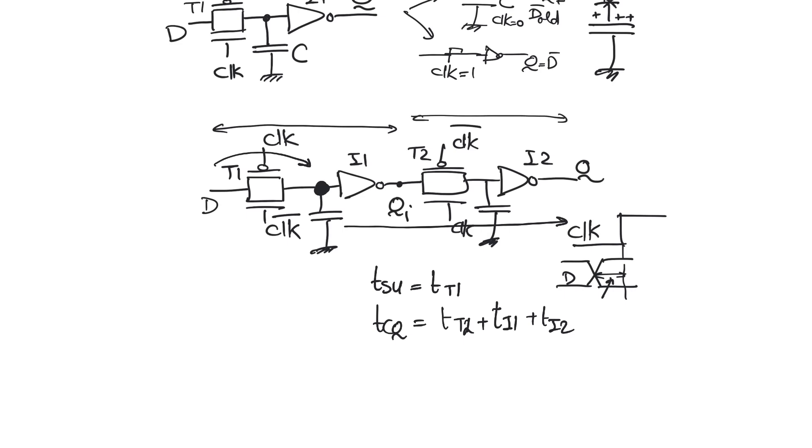Now what is hold time? Again if the clock is perfect as with the static latch, hold time will be zero because as soon as the active edge comes, transmission gate 1 disconnects D from the rest of the circuit and thus there is no need to preserve the value of D.